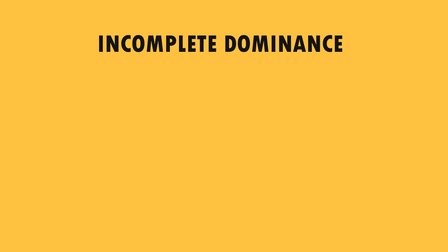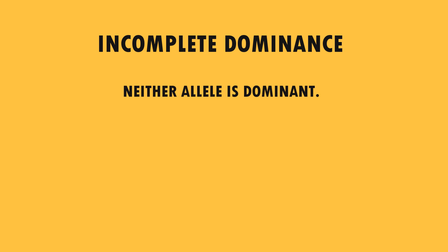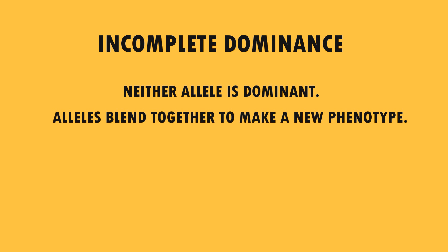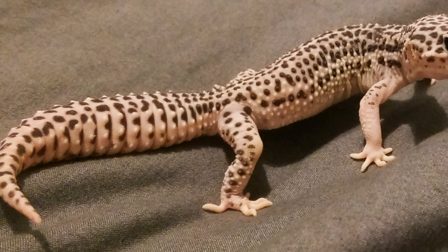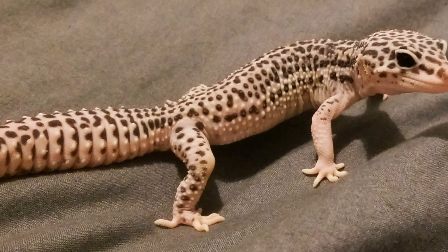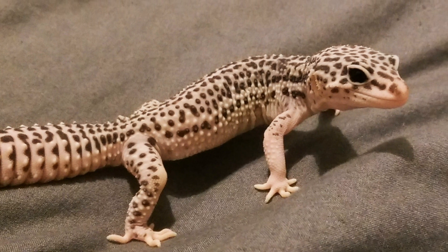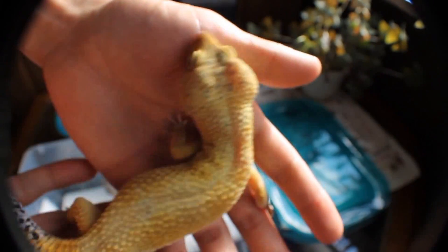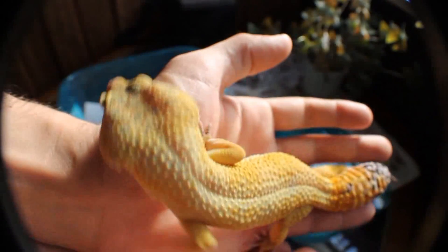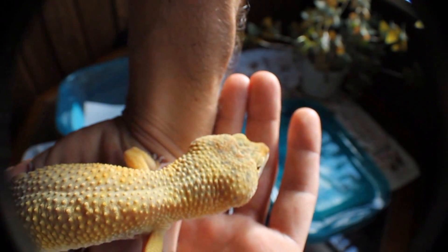Next let's quickly touch upon incomplete dominant alleles. Incomplete dominance is where neither allele is dominant — the two alleles basically blend together to create a new blended phenotype, and in leopard geckos it's usually known as a super version. For example, if you breed two Mac Snows together they may produce Super Snows or Super Mac Snows. Another example is Giants: if you breed two giant leopard geckos together you'll get about 25% normal sized, 50% giants and 25% super giants.